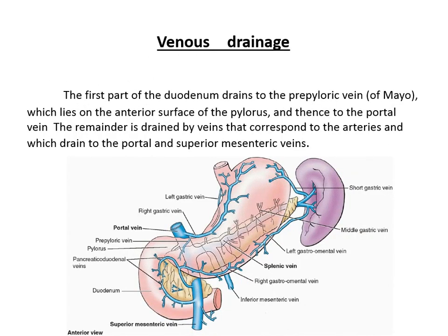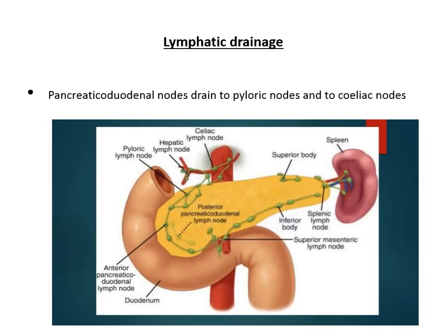The venous drainage: the first part of the duodenum drains into the pre-pyloric vein (vein of Mayo), which runs anterior to the pylorus, and then to the portal vein. The remainder drains corresponding to the arteries into the portal and superior mesenteric veins. Lymphatic drainage goes to the pancreaticoduodenal nodes, then to the pyloric nodes and celiac nodes.